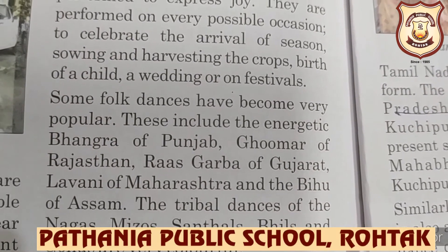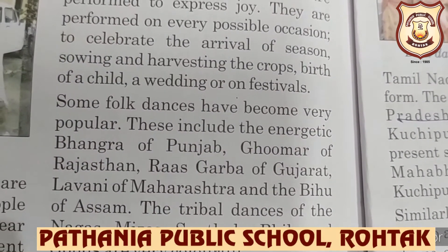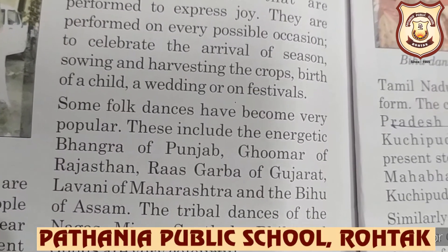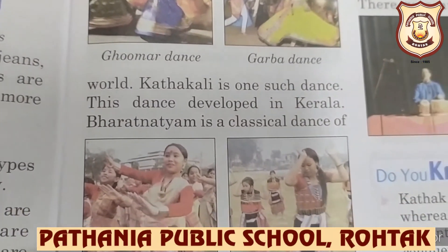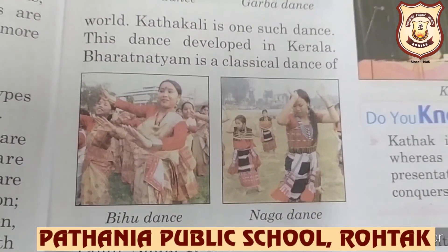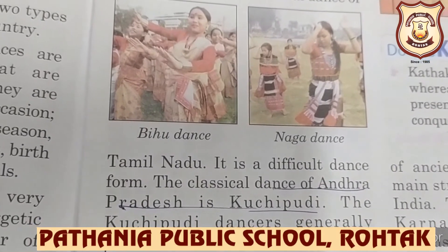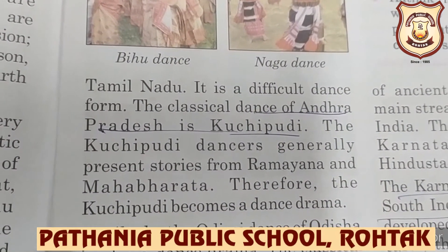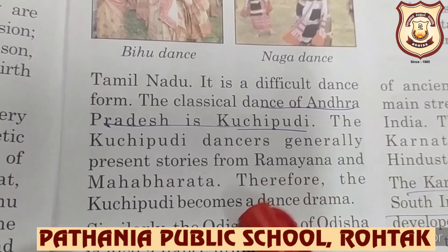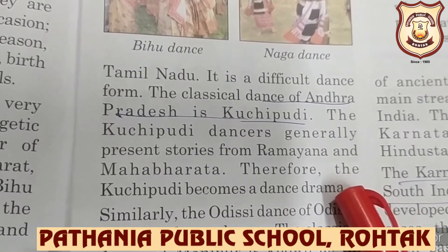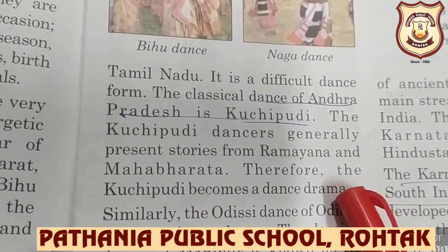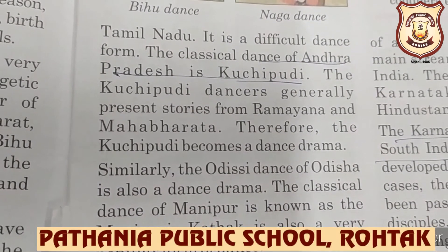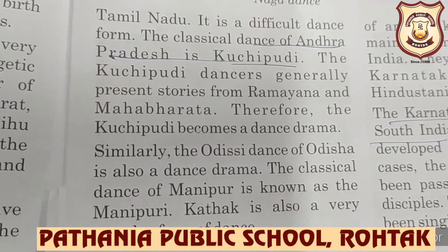The classical dances of India have become famous throughout the world. Classical dance began as a form of worship in temples and later were performed for kings and rulers. Kathakali developed in Kerala; Bharatanatyam is the classical dance of Tamil Nadu. Kuchipudi is the classical dance of Andhra Pradesh — Kuchipudi dancers present stories from the Ramayana and Mahabharata, making it a dance drama. The Odissi dance of Odisha is also a dance drama. The classical dance of Manipur is known as Manipuri, and Kathak is also a very popular form of dance.